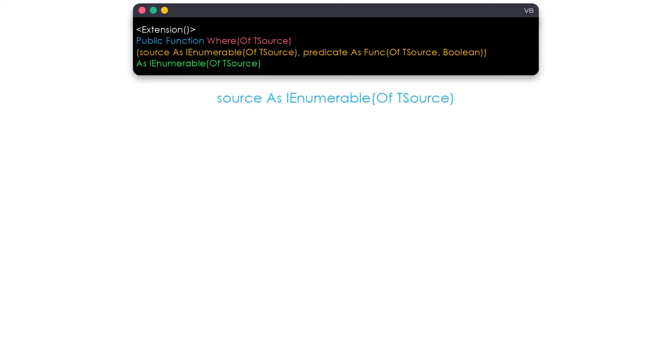This could be an array, a list, a data table, or any other data type that implements IEnumerable or IQueryable. The second input is a predicate of type function, which means we have to use a lambda expression. As output we get a new sequence of the same type as the input sequence, containing only the elements that meet the condition of the lambda expression.